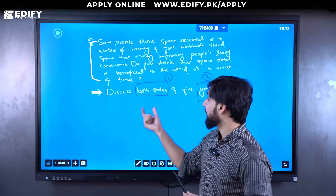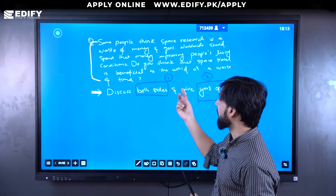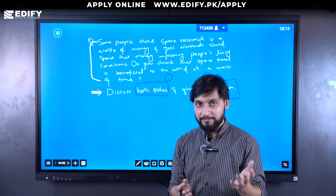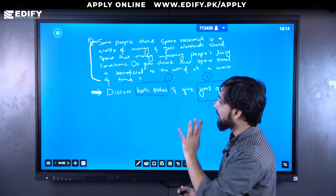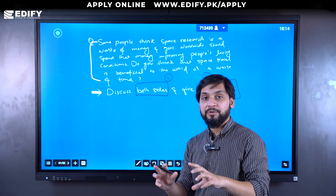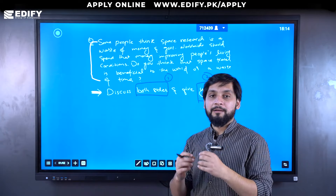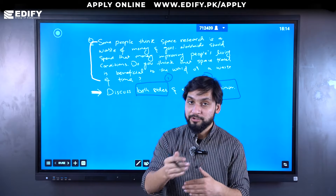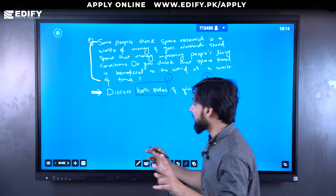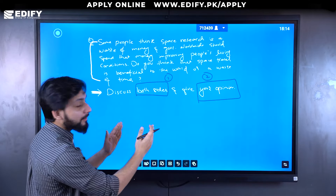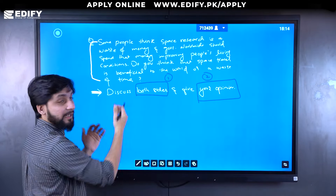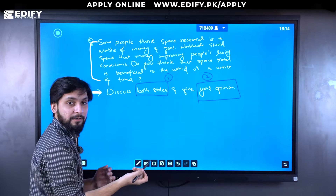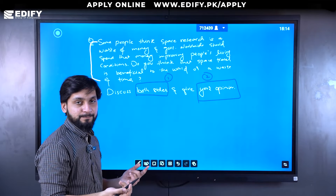There are two parts to this question: discuss both sides and give your opinion — one and two. You need to fulfill both of these requirements. Now, when you have this statement, you first identify the sides. One side is that it's a waste of money and a waste of time; the other side says it is beneficial. We are navigating between these two arguments and we have to see what each side says, and after that you have to present your own personal opinion.